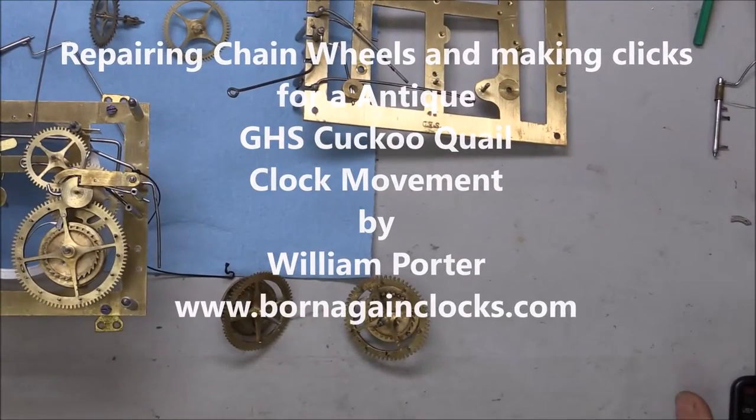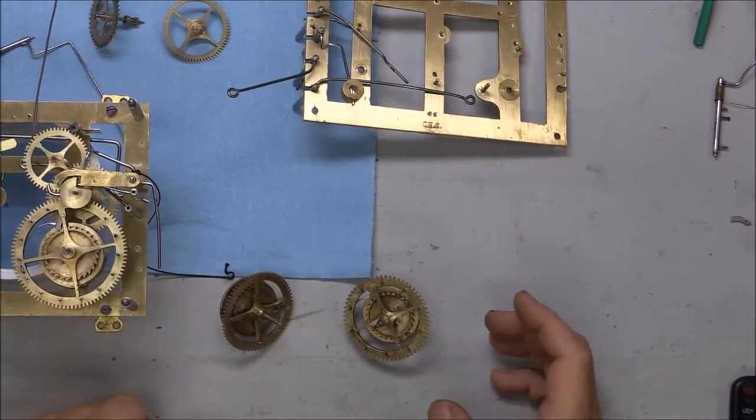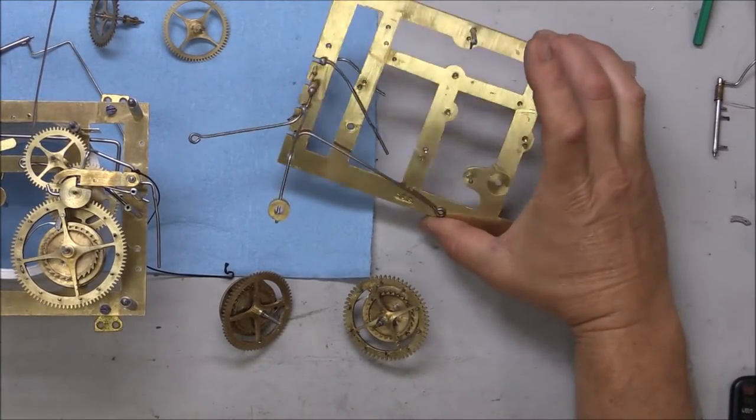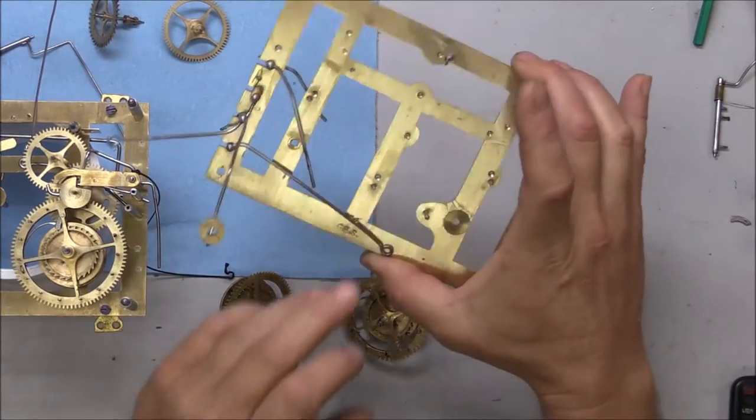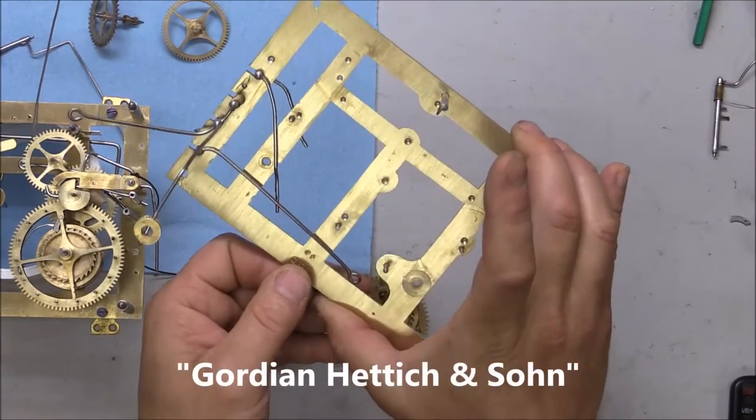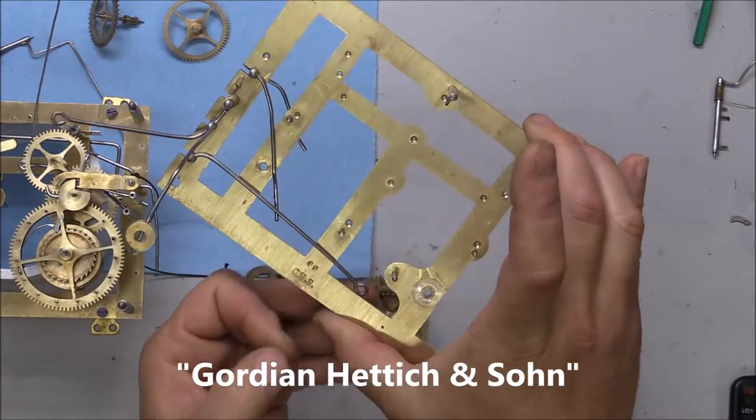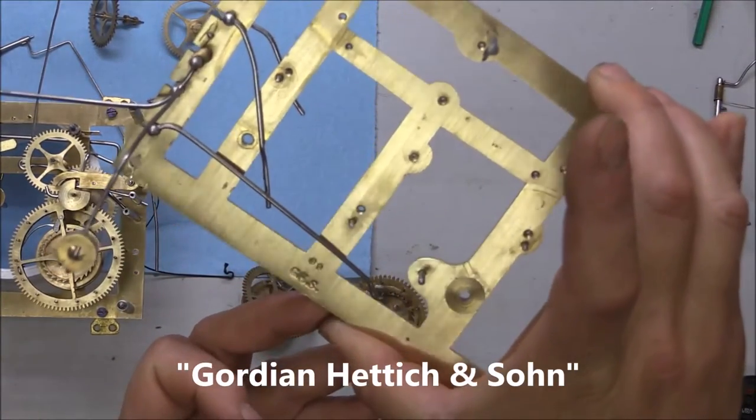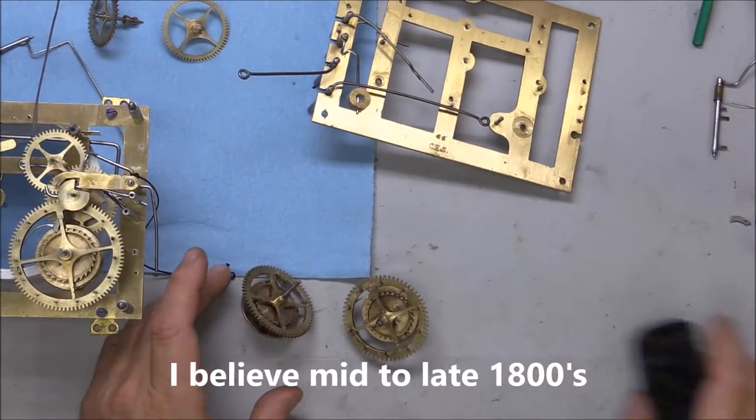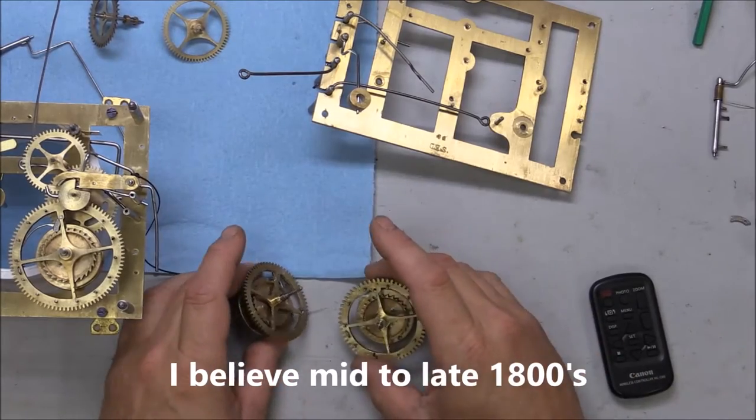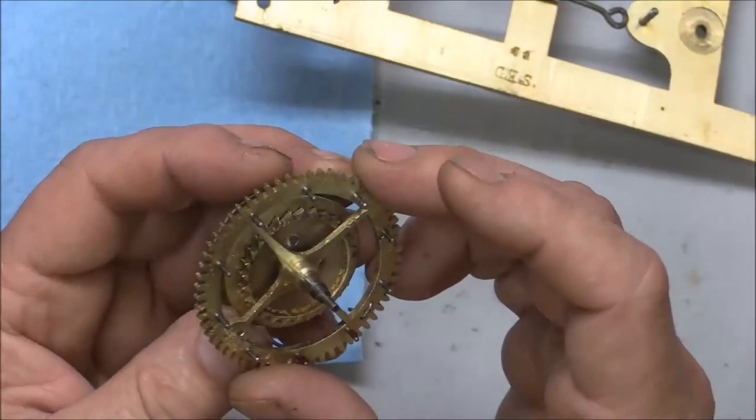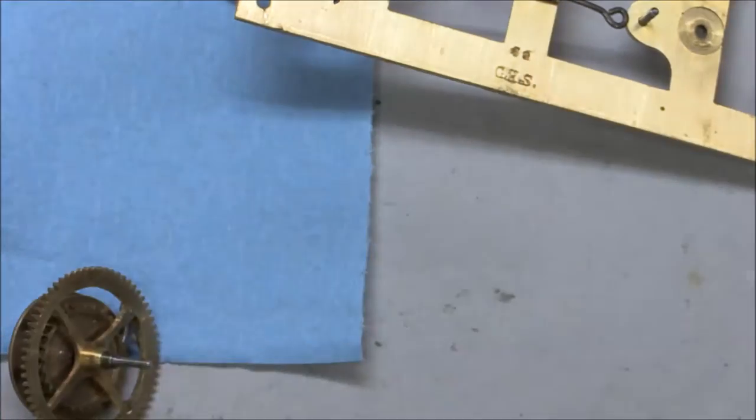Alright, William here working on an old cuckoo quail cuckoo clock. It's a GHS number 39. Pretty cool clock, got a problem. Let me zoom in here a little bit and you can see what I'm going to be looking at, but we have an issue with the chain wheels and the clicks.